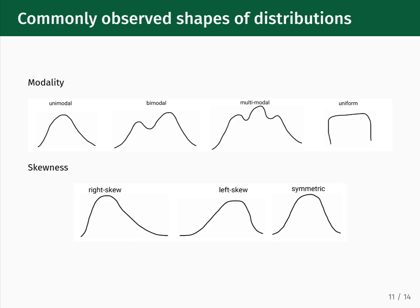Here are some helpful diagrams that summarize the different types of modality and skewness that we just discussed. Remember, for modality we look for prominent peaks, and from that we identify whether a distribution is unimodal, bimodal, multimodal, or uniform. For skewness, we look at whether the distribution is shifted to one side — so we have right-skewed distributions, left-skewed distributions, or symmetric distributions. Remember, the location of the long tail determines whether the skew is to the right or the left.